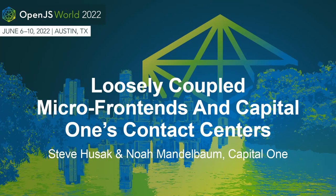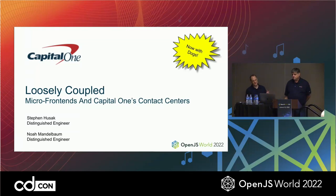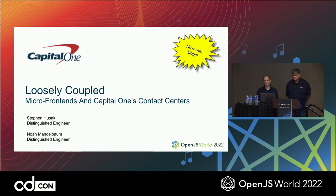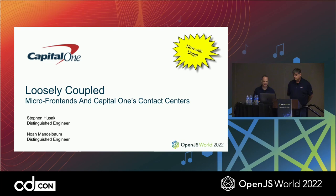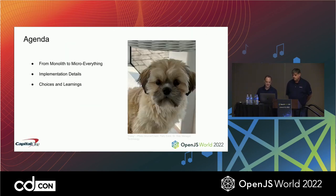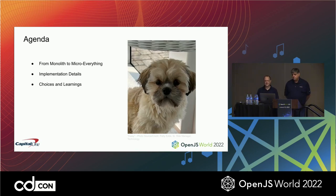Good afternoon, everybody. Thanks for coming. I am Noah, and this is Steve, and we're from Capital One. We're going to be talking about a large micro frontend microservices application we've built in the past couple years and are operating at scale at Capital One. This is going to be a journey where we take you from what originally was a monolith to a micro-everything architecture. We'll talk about some of the implementation details around this, and then some choices and learnings we've made along the way.